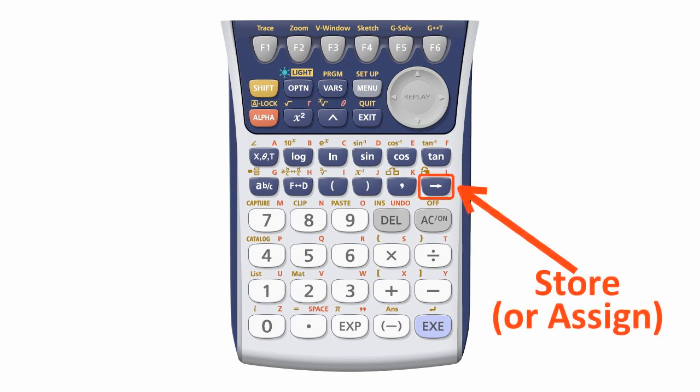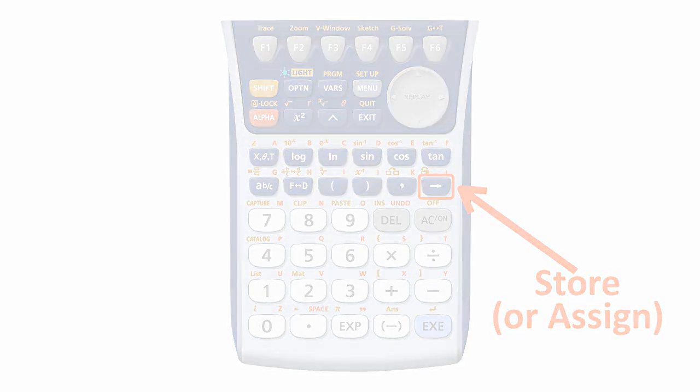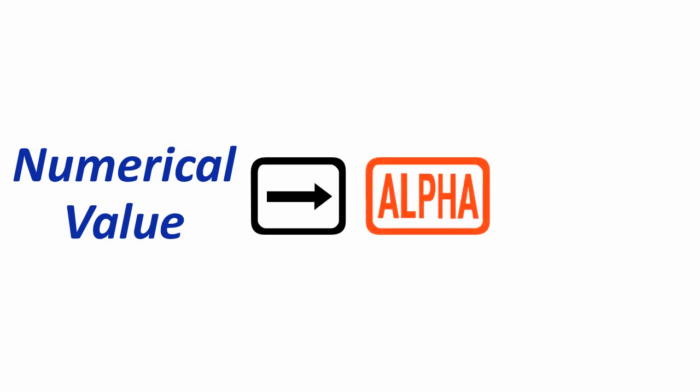This is the button you need to use to store or assign a value to a variable. Let me show you how it's used. First, you would input a numerical value. Then press store, then alpha, then select the variable you want to use to store this numerical value, and finally execute.